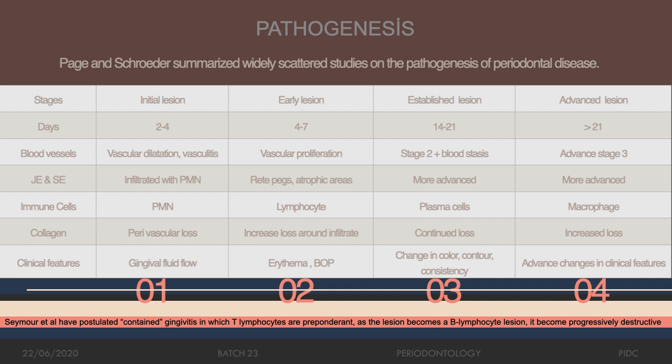According to studies, T-lymphocyte lesions tend to stay as gingivitis, but when the lesion becomes a B-lymphocyte lesion it may be more destructive and result in initiation of periodontitis.